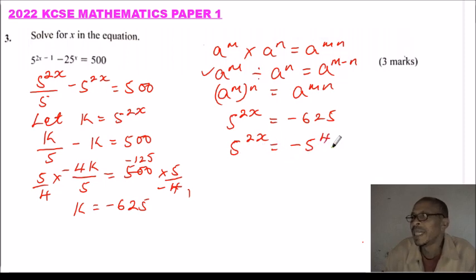So you see, for us to equate the indices, our base must be equal, but our base here is 5, and 5 is not equal to -5, therefore we cannot equate.